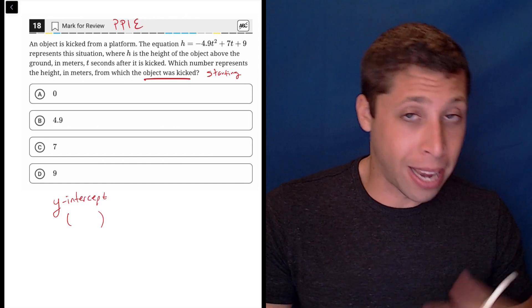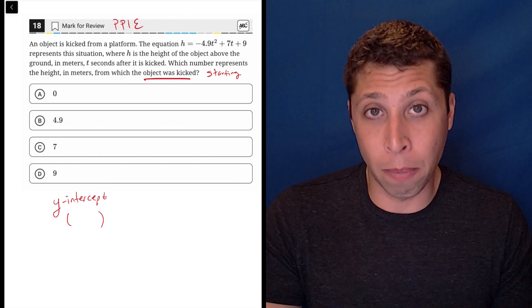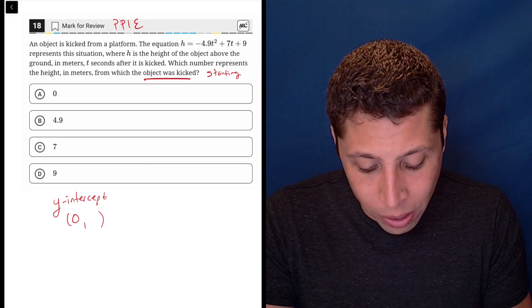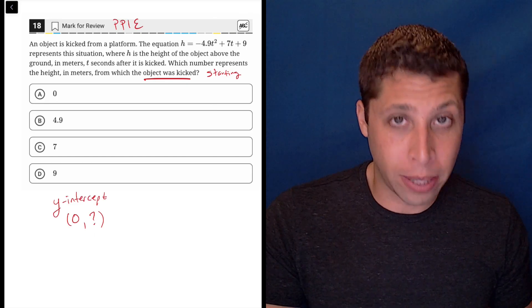We don't have the full point, we're obviously being asked for part of it, but we do know one part, which is that the x-coordinate, in this case t, is always equal to zero.